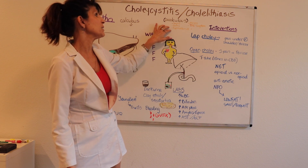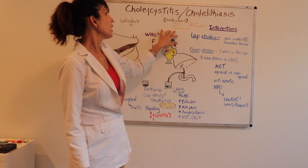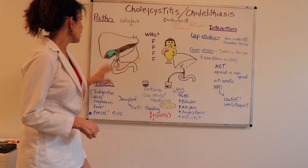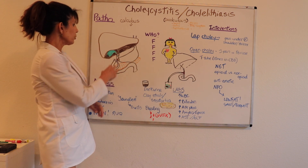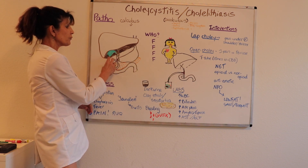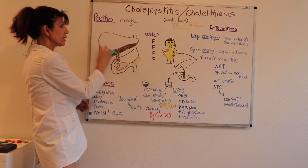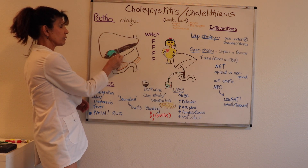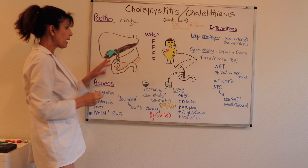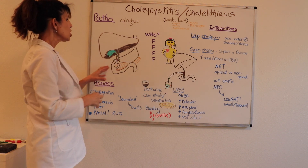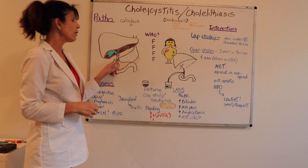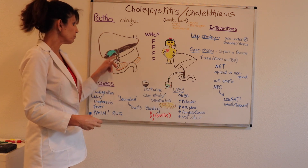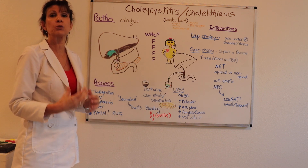Those low-perfusion states include sepsis, burns, hypovolemia, and other shock states. Gallstone formation can occur anywhere in the gallbladder itself, in the cystic duct coming right out of the gallbladder, and in the common bile duct. When bile backs up into the gallbladder and things don't propel forward, that's when you start to get signs and symptoms.